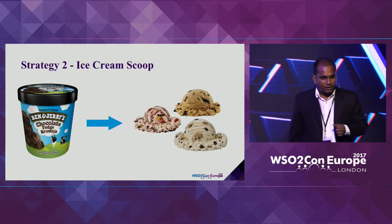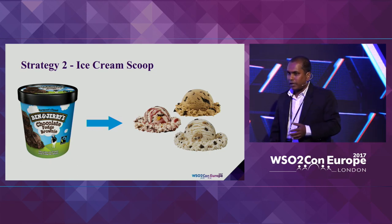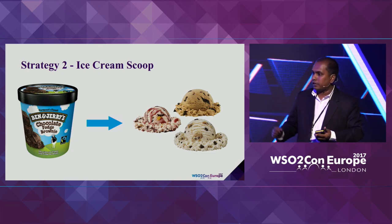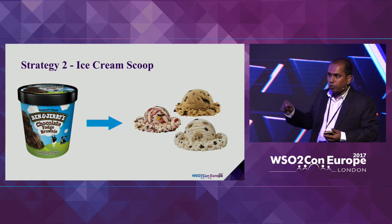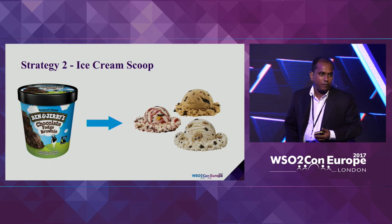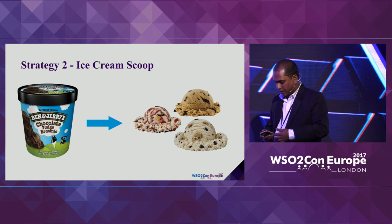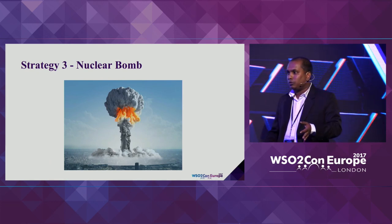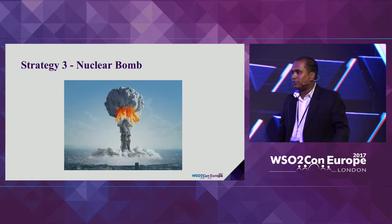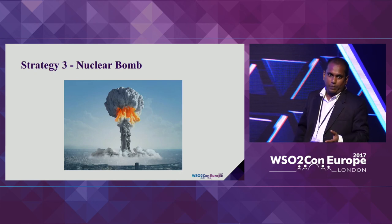The second strategy is the ice cream scoop approach. We have a large ice cream cup — that's our monolithic application. We extract functionality out of it and run it in a separate microservice architecture, iterating until we finish the whole ice cream cup. The third strategy is the nuclear bomb approach — destroying the monolithic and creating a microservice architecture from scratch. Practically, we haven't seen many enterprises using the nuclear bomb approach because they still need to support the monolithic application for their customers.